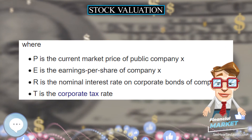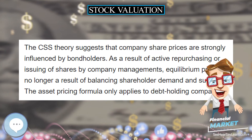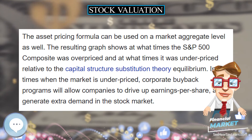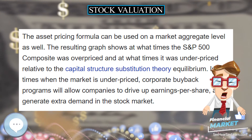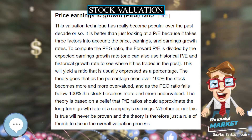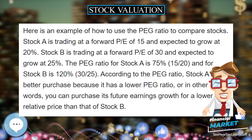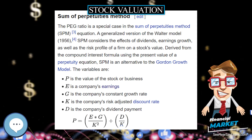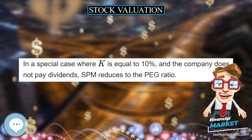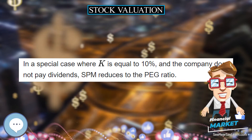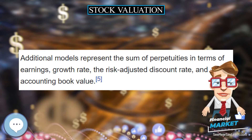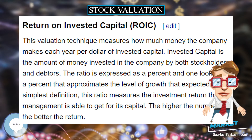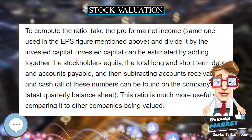Enterprise Value (EV). Enterprise value is equal to the total value of the company as it is trading for on the stock market. To compute it, add the market cap and the total net debt of the company. The total net debt is equal to total long and short-term debt plus accounts payable, minus accounts receivable, minus cash. The enterprise value is the best approximation of what a company is worth at any point in time because it takes into account the actual stock price instead of balance sheet prices. When analysts say that a company is a billion dollar company, they are often referring to its total enterprise value. Enterprise value fluctuates rapidly based on stock price changes.